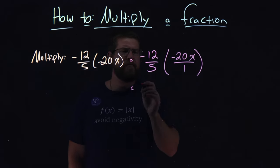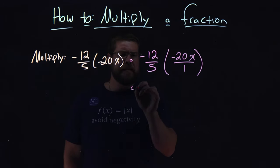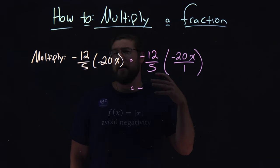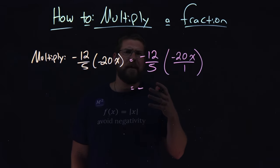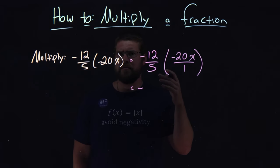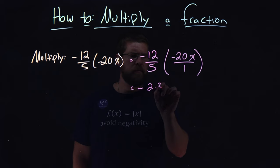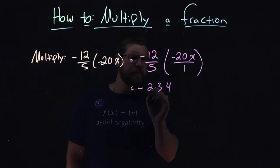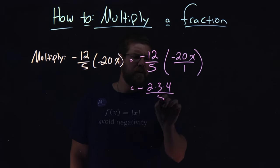Let's break down what negative 12 fifths is. We have a negative out front here, and 12 is 3 times 4, or 2 times 3 times 4, the prime factorization of it. And we have 5 down here.